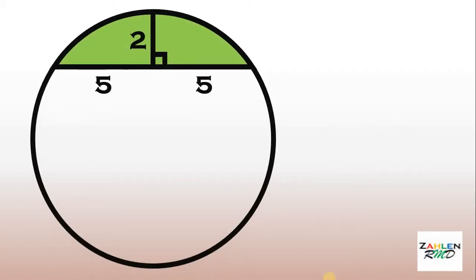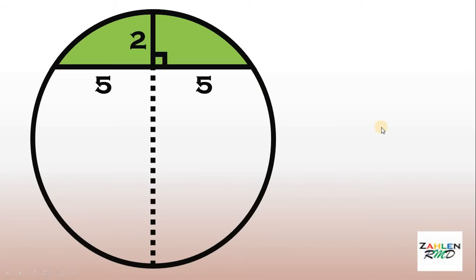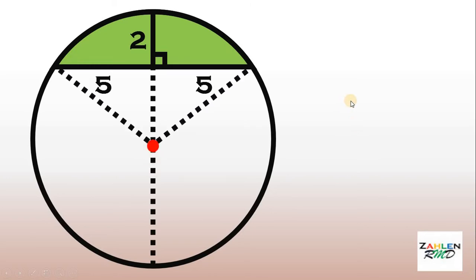I hope you paused this video. Now let's see if you got the correct answer. To answer this question, the first thing to do is to extend this segment. If you do that, this will serve as our diameter of this circle. Next, locate the center and draw some radii.